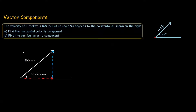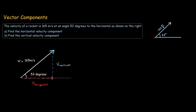If we call this vector here the resultant vector V, this vector down here would be called V horizontal, and the blue vector over here would be called V vertical. So adding the horizontal and vertical vectors will give us a resultant vector of 165 meters per second.